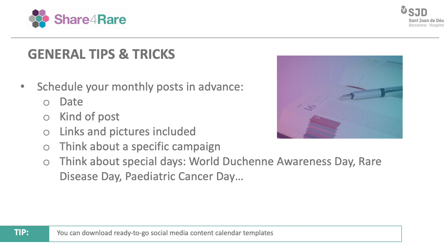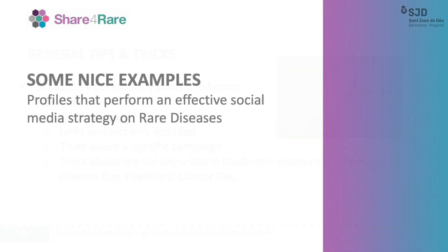Post scheduling is crucial. You have to plan your monthly posts far enough in advance and make sure there are no grammar or spelling mistakes and that all links are properly working. All posts must share the same structure, tone, and format. Think of the dates, the kind of posts you want to create, your links and pictures. Think about campaigns and special days like World Duchenne Awareness Day, Rare Disease Day, or Paediatric Cancer Day — you have many options.